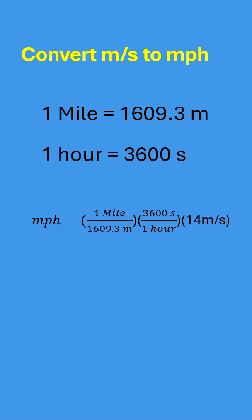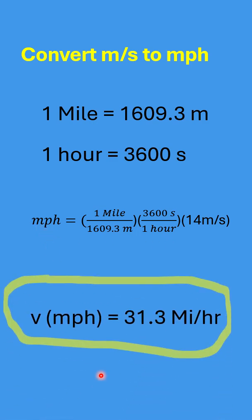So if we convert this, we're going to take this 14 meters per second and multiply it by one twice, essentially. So one mile divided by 1,609.3 meters, that's just a one. And 3,600 seconds divided by one hour, that's effectively just a one. But we're converting the units, so this turns out to miles per hour. So what we come up with is 31.3 miles per hour.